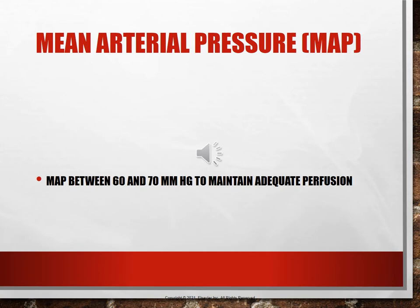The mean arterial pressure needed to maintain adequate perfusion is between 60 and 70 mmHg. The equation used to find mean arterial pressure is: two times the diastolic plus the systolic, divided by three. When you take a blood pressure measurement, you're working with the systolic and diastolic — the upper and lower numbers.